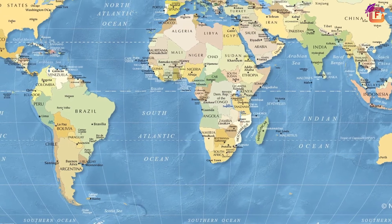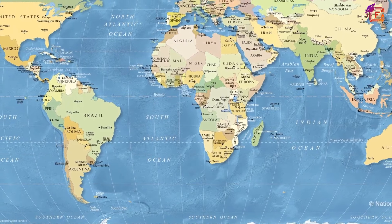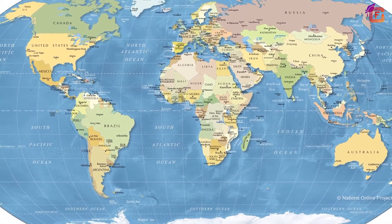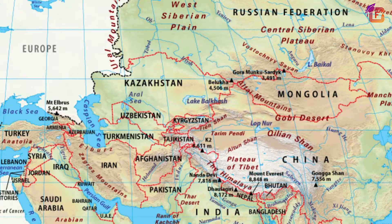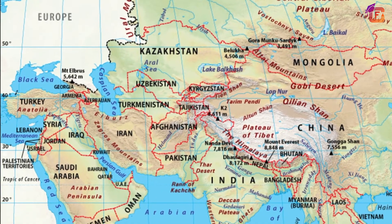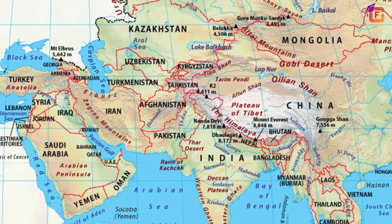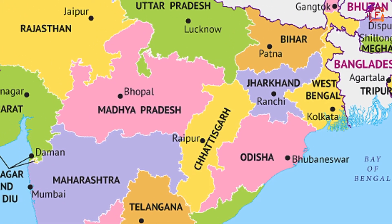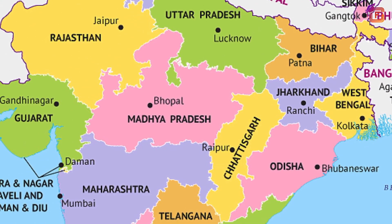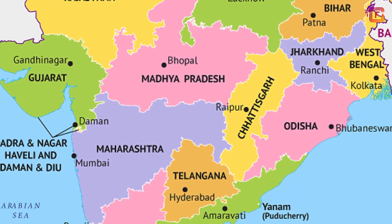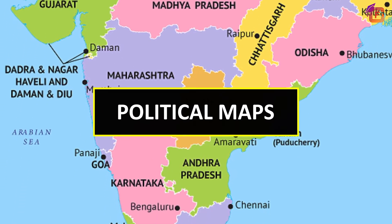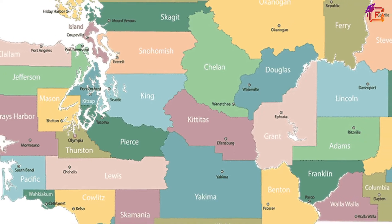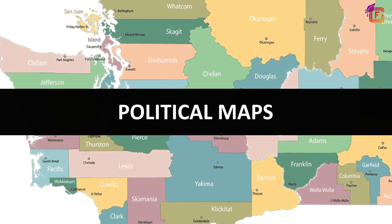Political maps are those maps which show political divisions — that is, different countries into which the world is divided politically. Each country is separated from the other by external boundaries, and each country is subdivided into provinces or states. Maps showing such divisions are called political maps. The reference maps most widely used are the political maps.